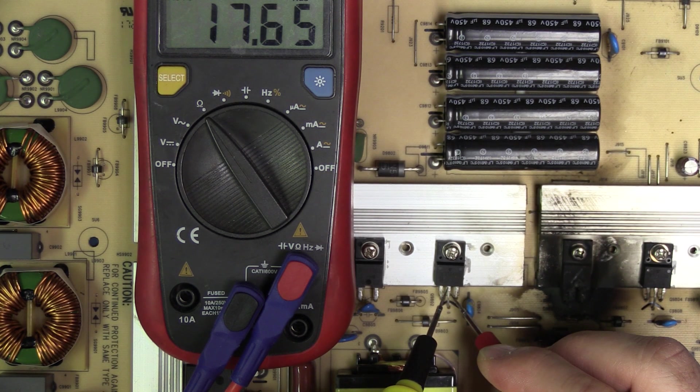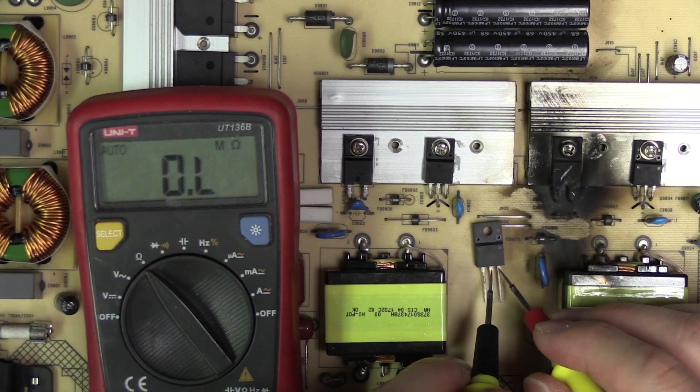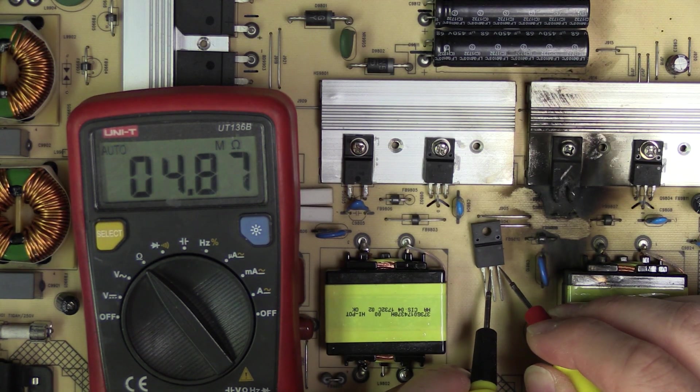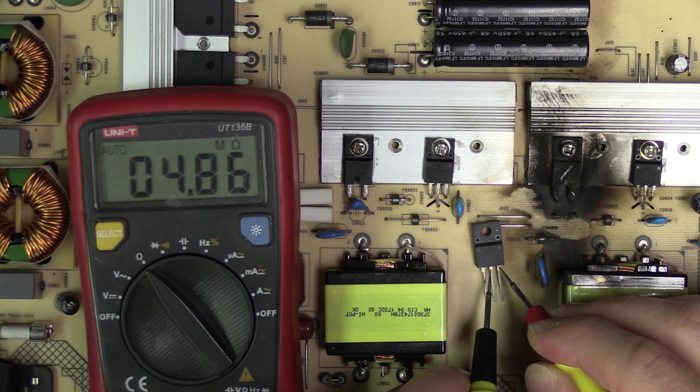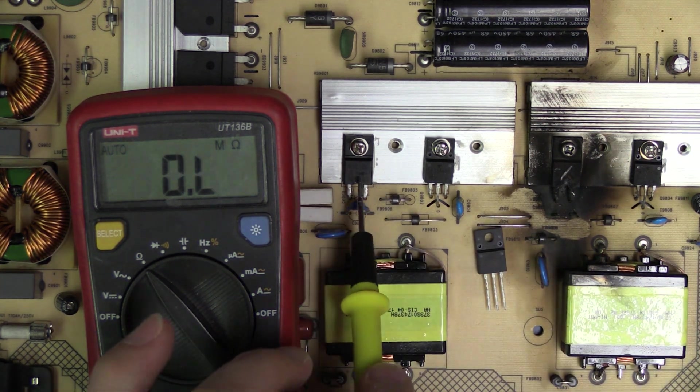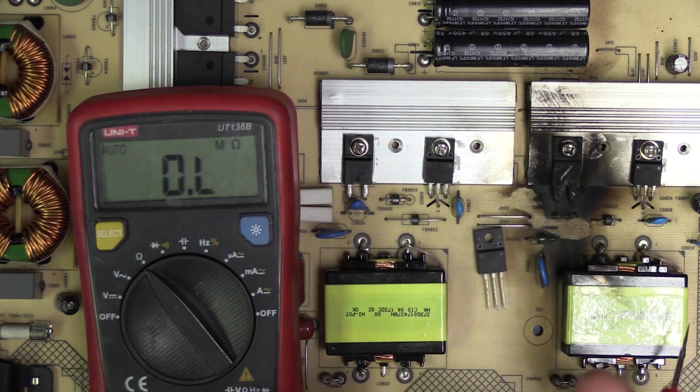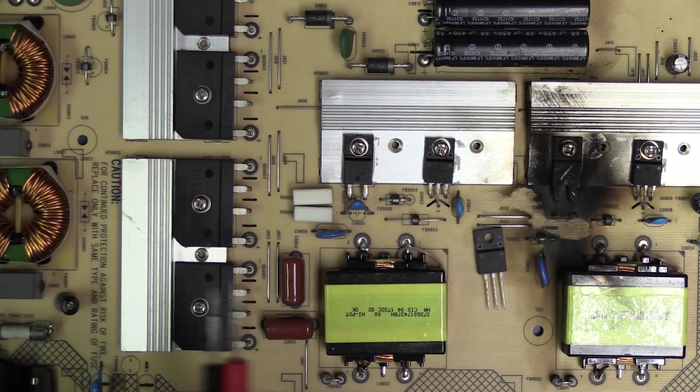I'm getting about 17 kilo ohms. This one is a good transistor. When I measure that, it's showing 4.8 mega ohms. What we'll do is remove all four of these and re-measure them again out of circuit.